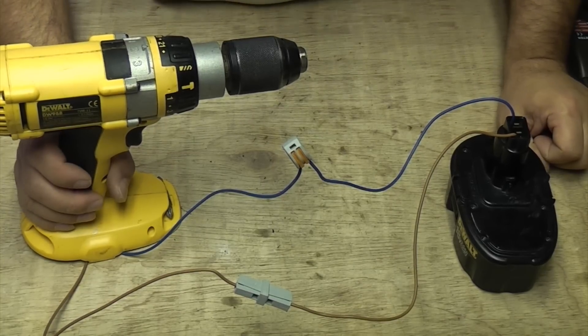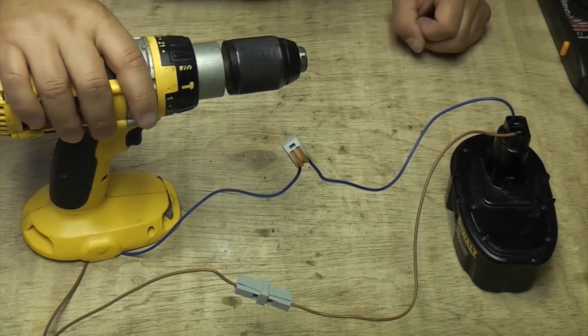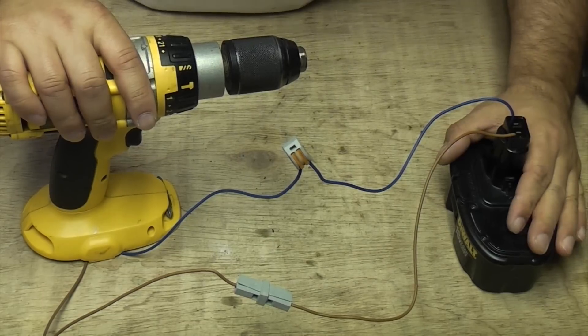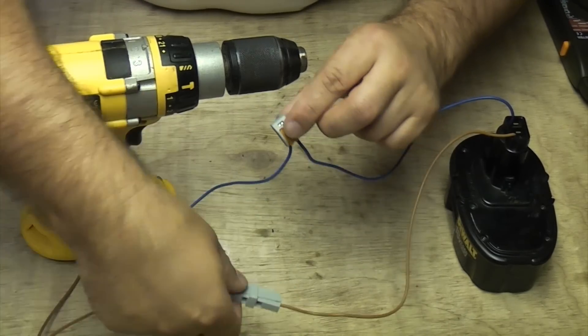I've rigged this simple circuit up here so that we can measure amperage. So we've got a cordless drill there and the battery for the cordless drill there, and in between I've put two wires with two connectors in between.